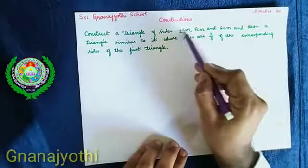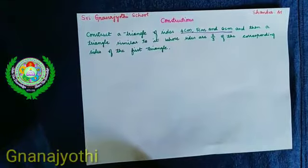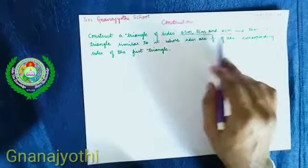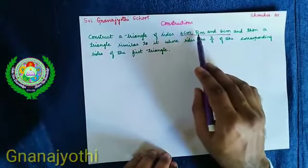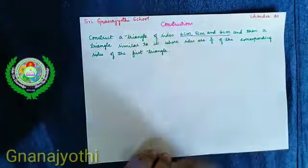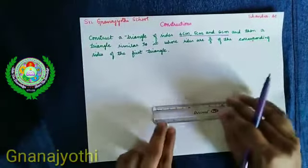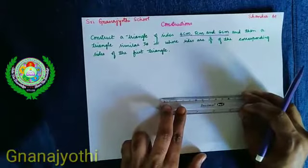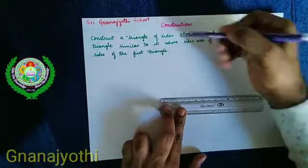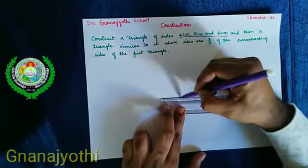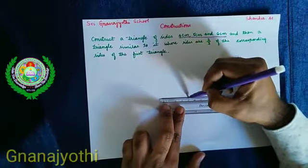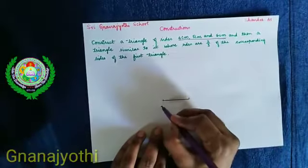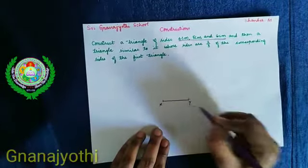First, let us mark the sides of the triangle and construct the triangle with sides 4 cm, 5 cm and 6 cm. I am going to start by constructing this triangle. First, we will take 4 cm. I will call it X and Y.